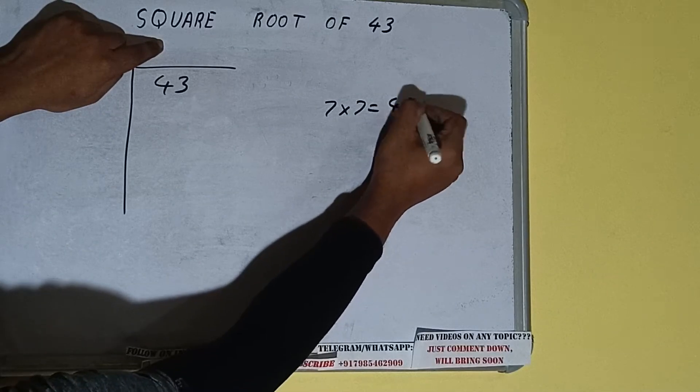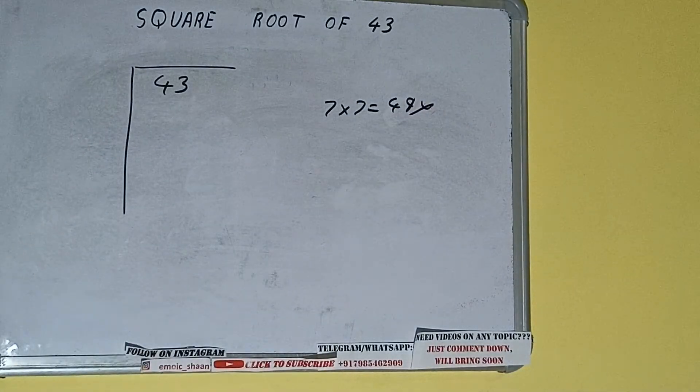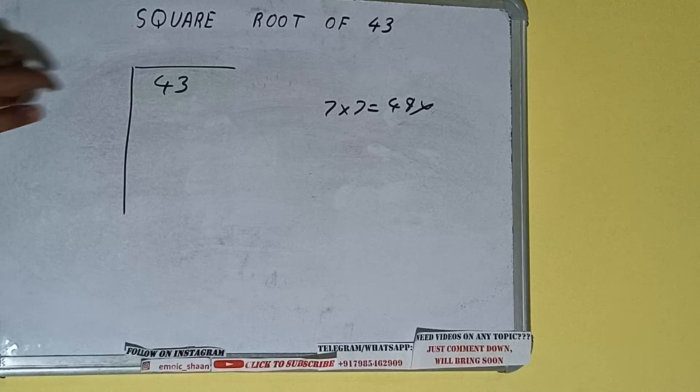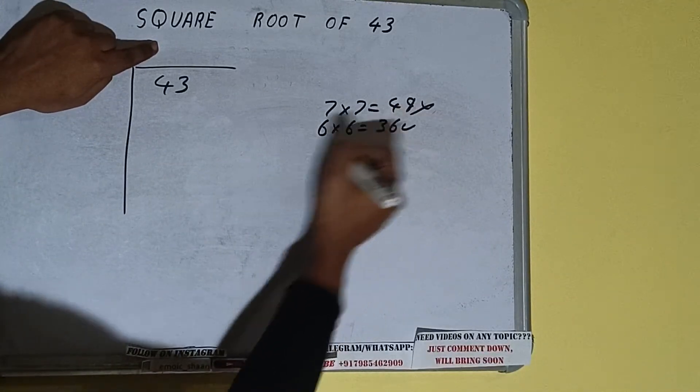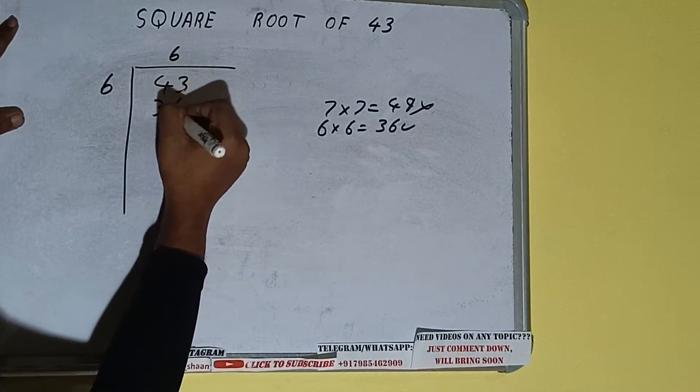If we write 7 here and 7 here it will be 49, which is greater than 43, so we cannot take it. If we write 6 here and 6 here it will be 36, which is good to take. So 6 here and 6 here, 36.